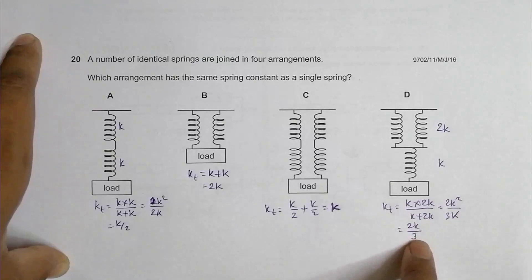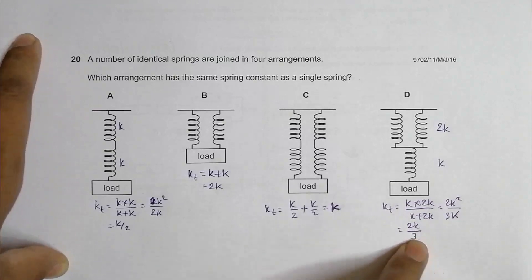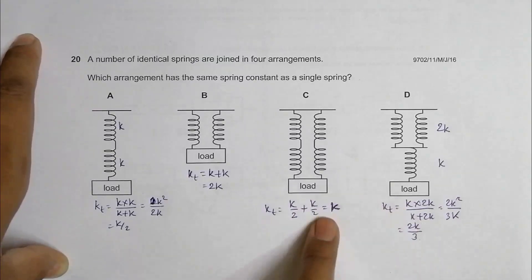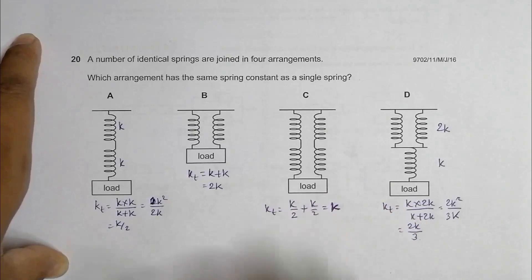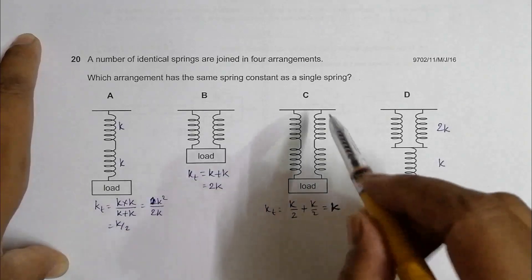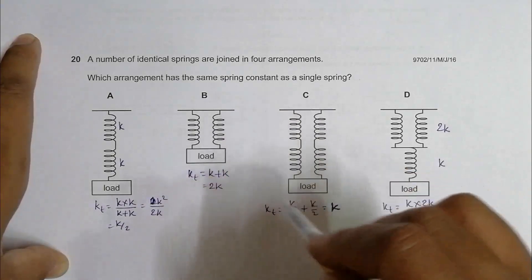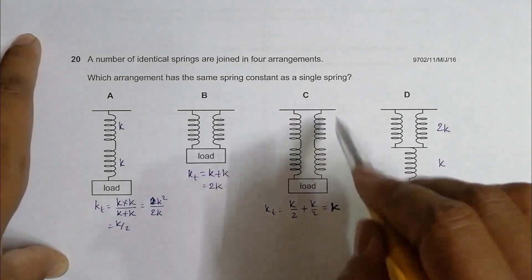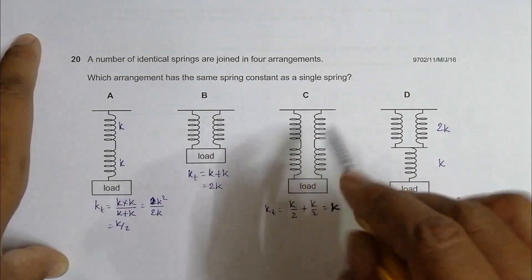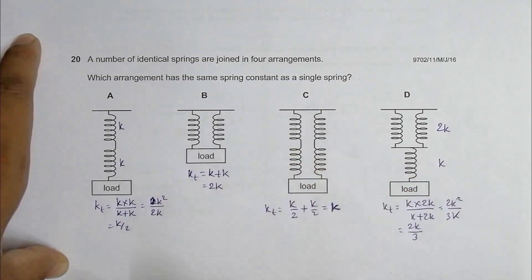The only answer choice equal to k is choice C. This arrangement works as a single spring, but it consists of four springs.